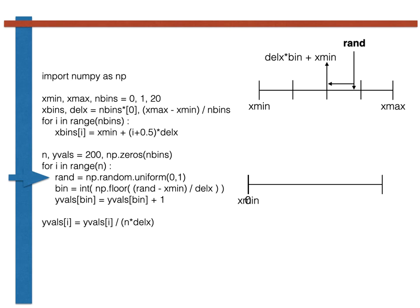Now let's consider what happens when we divide by delx. Delx, remember, is equal to the width of each of the bins. Consequently, when we divide the number by delx, we turn that a number that is between 0 and xmax minus xmin to a number between 0 and nbins as shown here.